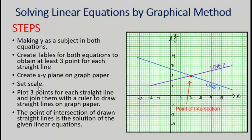We'll set the scale, meaning one centimeter or one large box representing how many units on both axes. Then we'll plot the points obtained from the tables for each straight line and use a ruler to join those points to get two straight lines. The point where those two straight lines intersect each other is actually the solution — the x-coordinate representing x and the y-coordinate representing y.